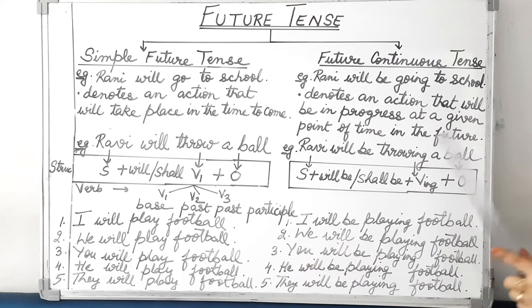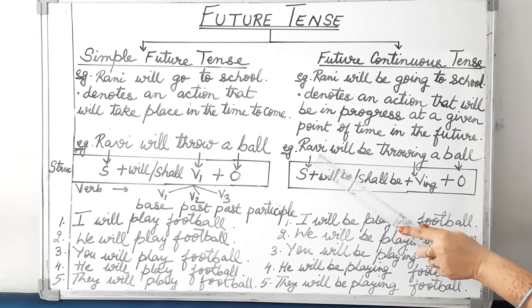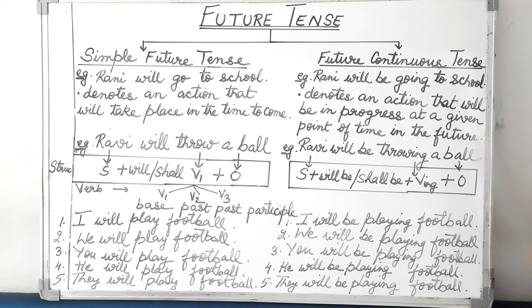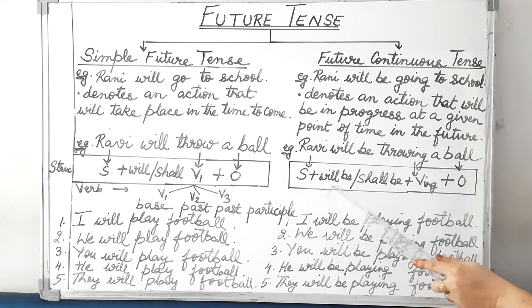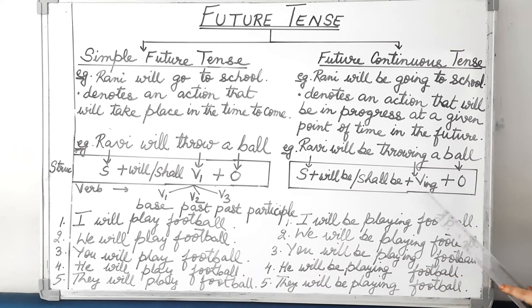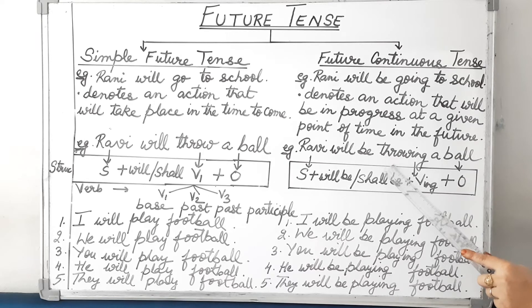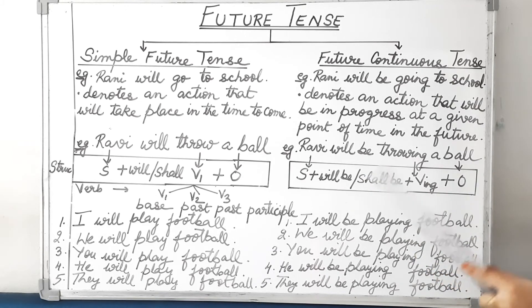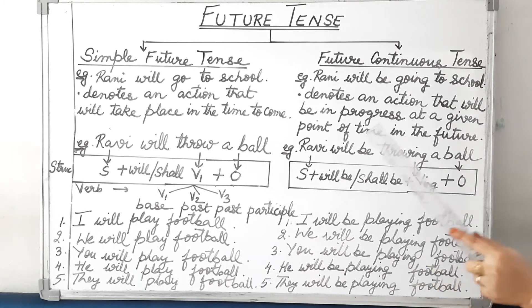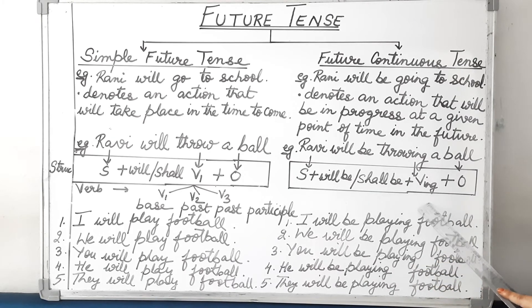See this example: Ravi will be throwing a ball. So our structure will be: subject plus will be or shall be plus the -ing form of the verb plus object. To form the -ing form, we take the base word — throw — and add -ing, so it becomes throwing. Will be is very important; you have to add will be plus the -ing form of the verb to make future continuous tense.